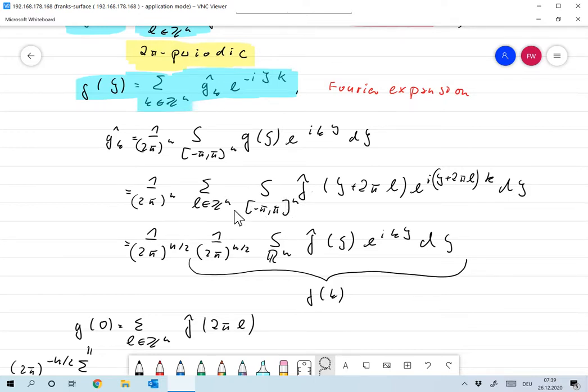So actually what we're doing here in that summation is we're integrating over all of Rn. So this is nothing but the integral over all of Rn. And ξ plus 2πL becomes ξ. So this is integral over Rn, f hat of ξ e to the ikξ dξ.